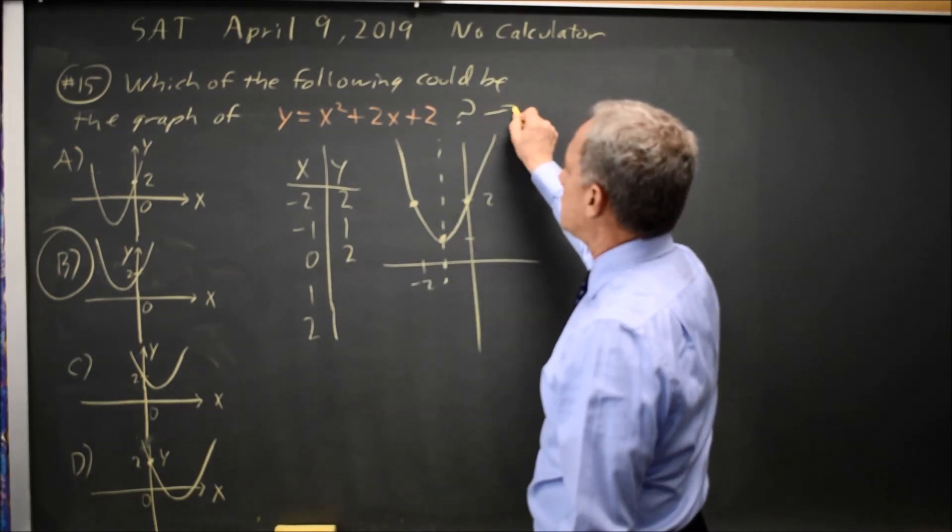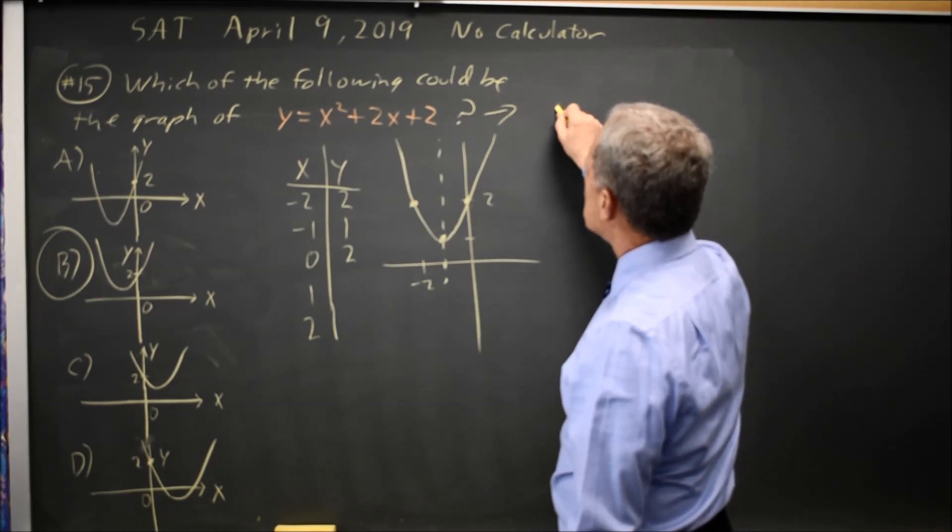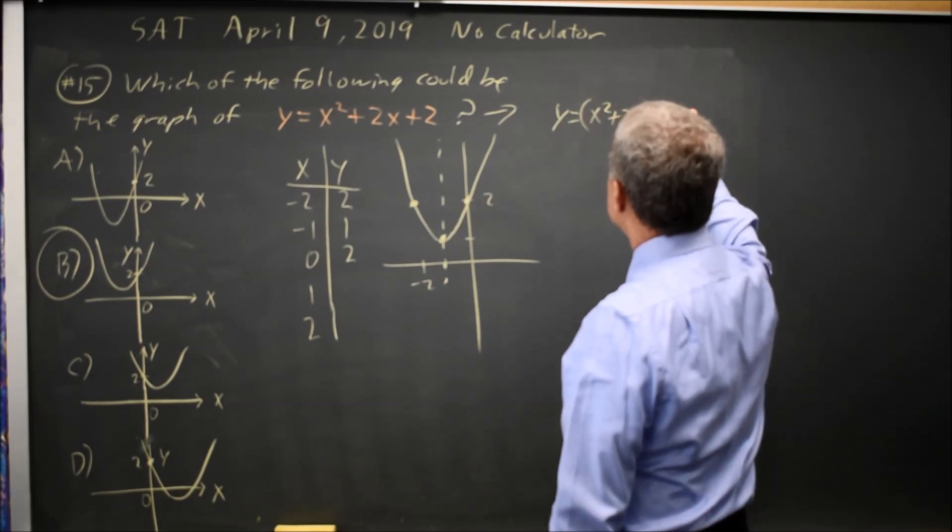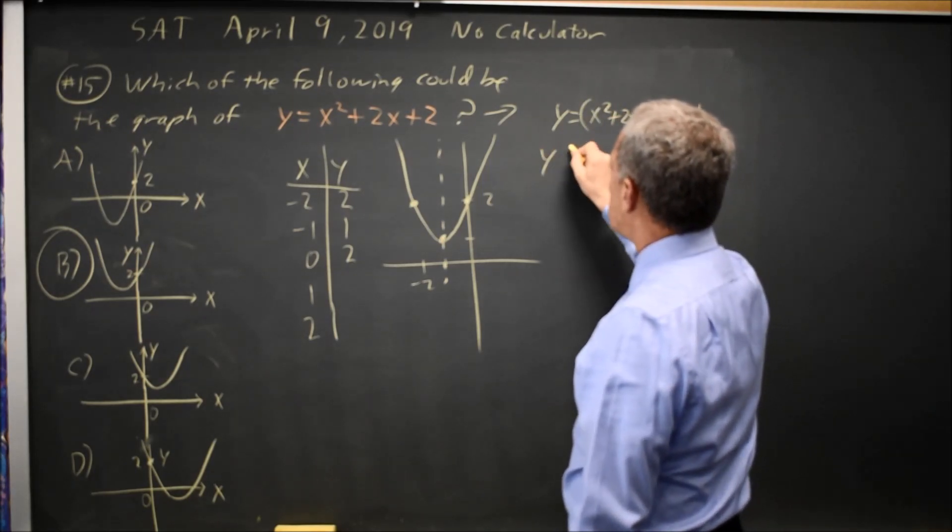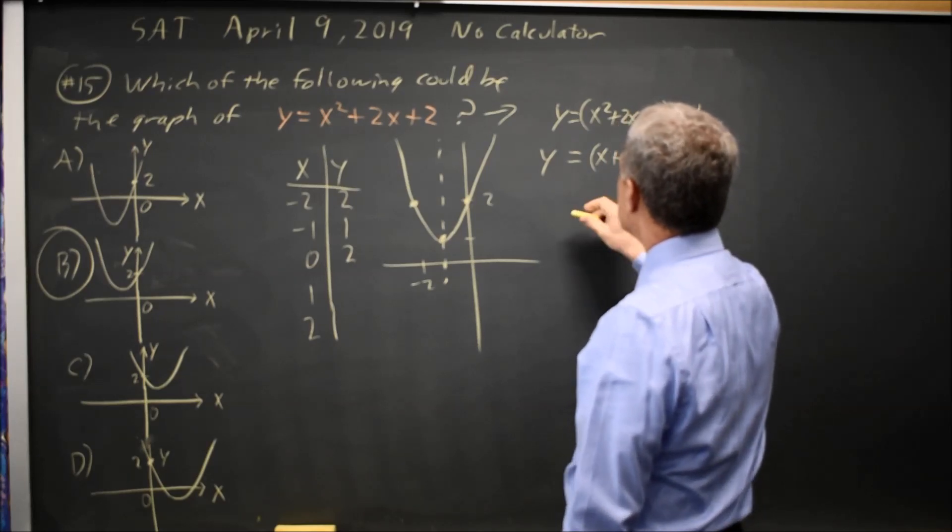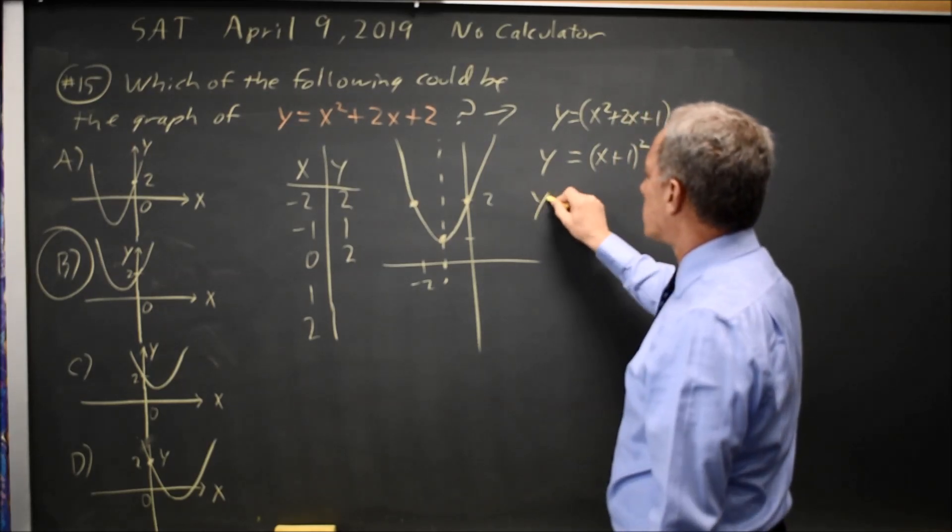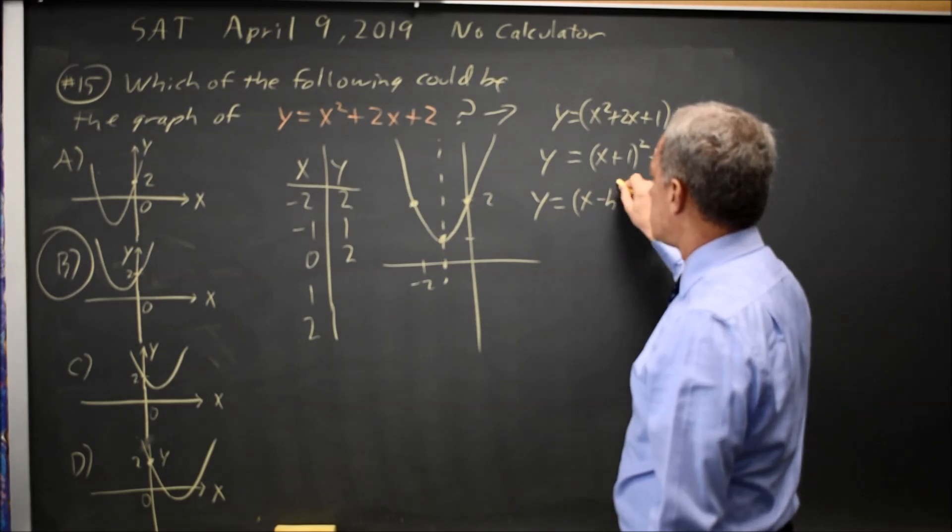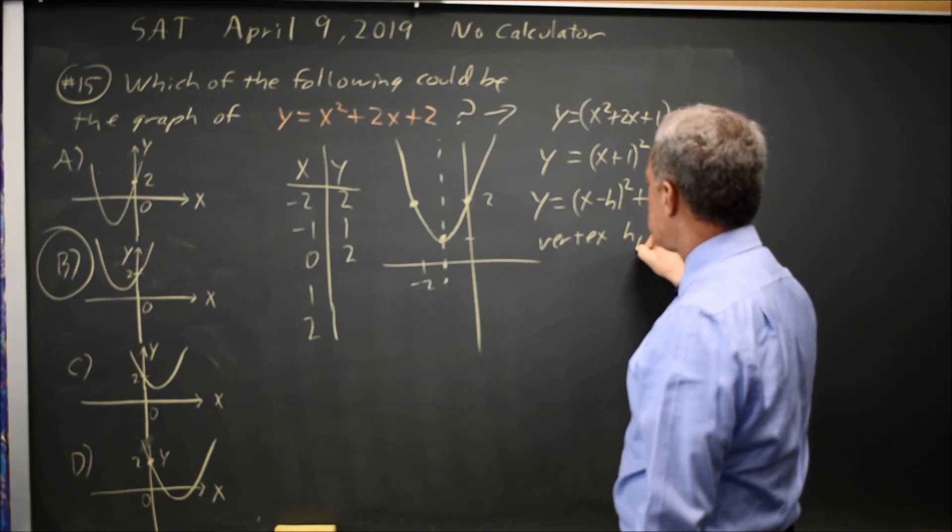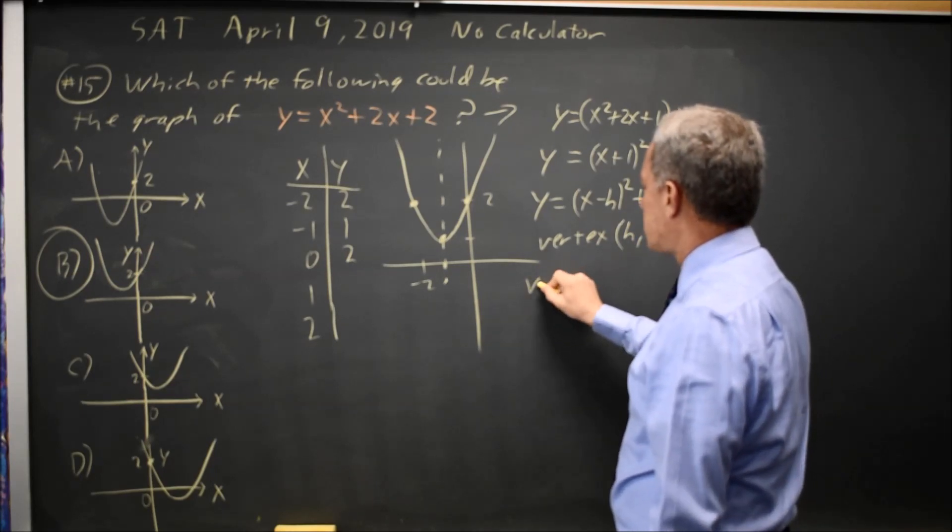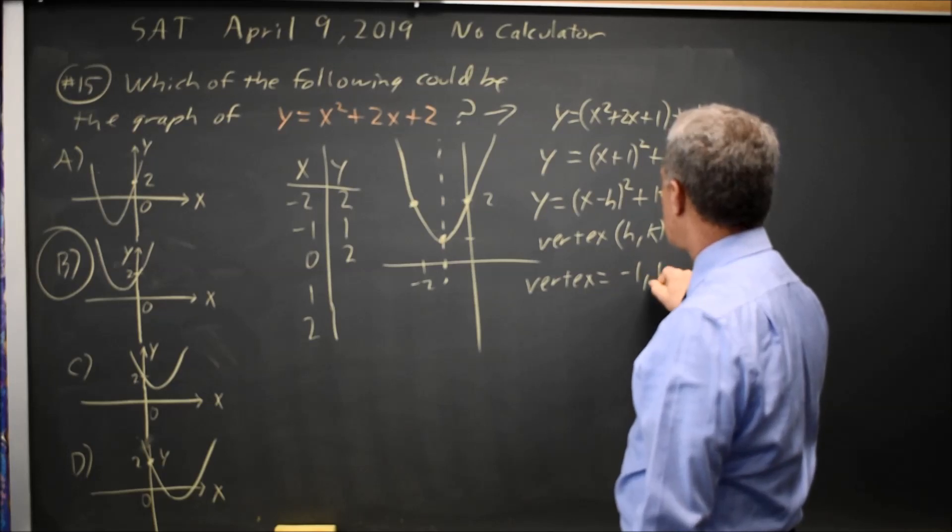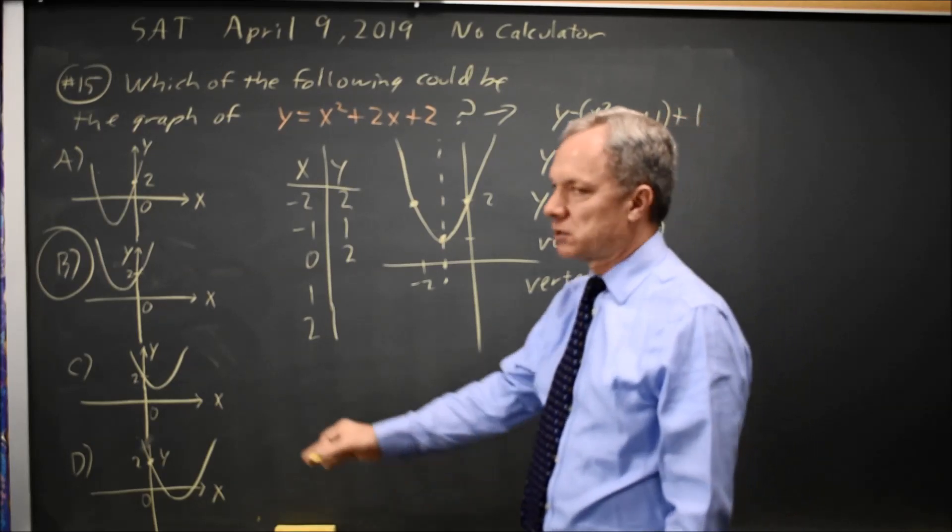Alternatively, you could complete the square here. And that's Y equals X squared plus 2X plus 1 plus 1, which is Y equals (X plus 1) squared plus 1, for the form Y equals (X minus H) squared plus K with vertex H, K. So our vertex is negative 1, 1, which is choice B.